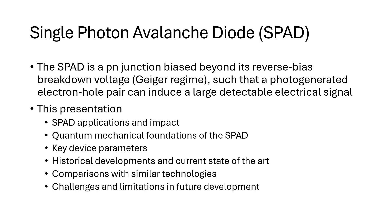In its most fundamental sense, a SPAD is simply a photodiode biased past its breakdown voltage into what we call the Geiger regime, such that even a single incident photon that generates an electron hole pair within the material will produce a large, detectable electric pulse. In this presentation, I hope to convey the utility and impacts of ultra-sensitive single photon detection, emphasize the technological underpinnings, review the history of the SPAD and the current state of the art, and then go into comparisons with similar technologies and future challenges and limitations to development.